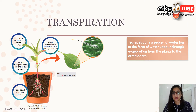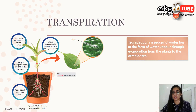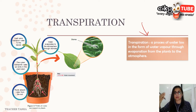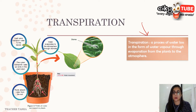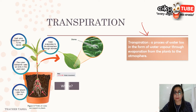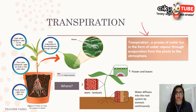Now, what is transpiration? This is the definition: transpiration is a process of water loss in the form of water vapor through evaporation from plants to the atmosphere. Transpiration begins at the roots, where water diffuses in by osmosis.